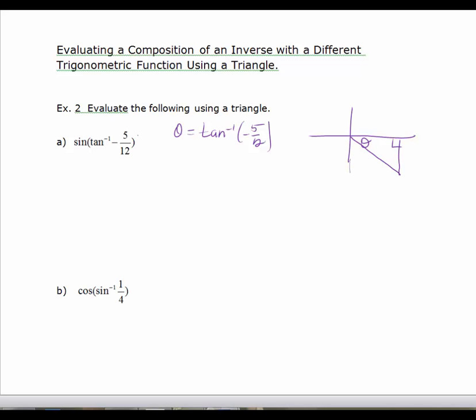So I know that tangent is y over x. And so I have to decide which is positive and which is negative. And so if I'm in the fourth quadrant, it's the y value that is negative and the x value that's positive.